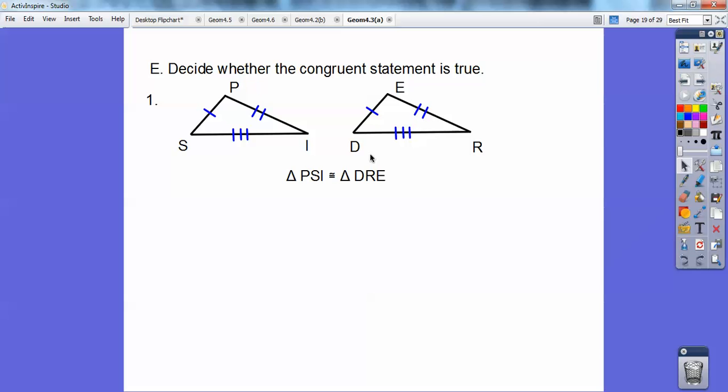So this is not correct. This congruence statement is not correct. If I was going to say PSI, to go from one to three, I would have to go from one to three, so this side to this side. So I'd have to say EDR. So no, it's not correct. PSI would be congruent to EDR. Whoops, I forgot my little triangle symbol there, but you guys get the picture.